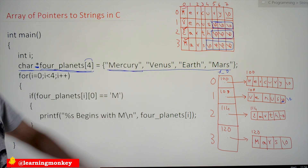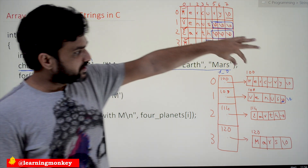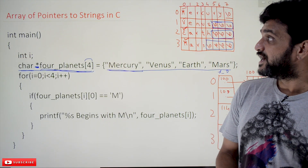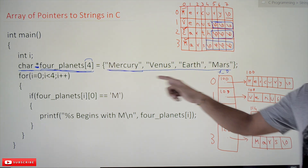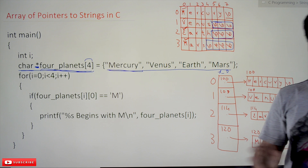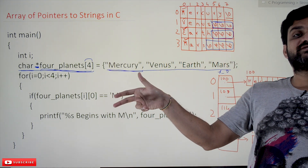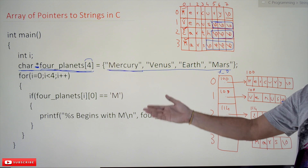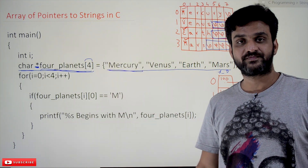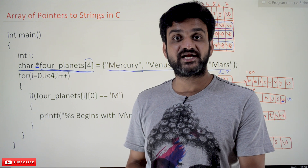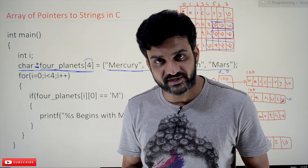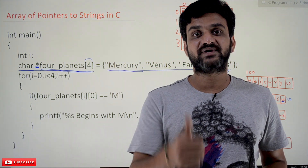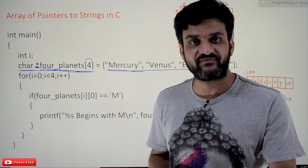So only this type of initialization is possible. As we have already covered in our previous video, the code will print the planets whose names start with 'M'. The key points to remember are: the declaration syntax for array of pointers to strings, and that they are string constants — they can be accessed but not modified. If you run this program, you'll get the same output as in our previous video. Thanks for watching — please subscribe, press the bell icon, post doubts in the comments, and share if you found it helpful.